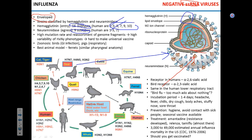Influenza is a zoonotic virus — it infects a variety of animals. We know about influenza virus in seals, whales, canines, cats, and a whole bunch of other animals. The vast majority do not transmit to humans, but the main route of zoonotic transmission to humans is from pigs.